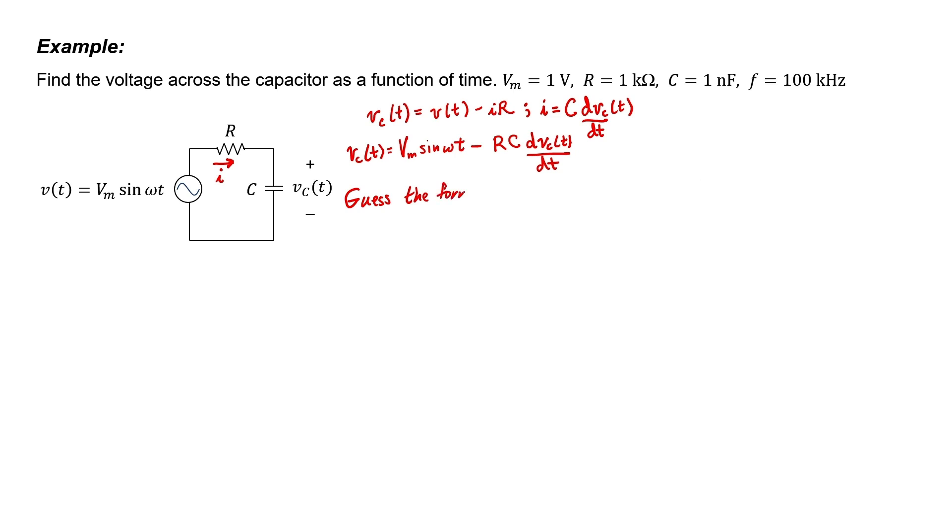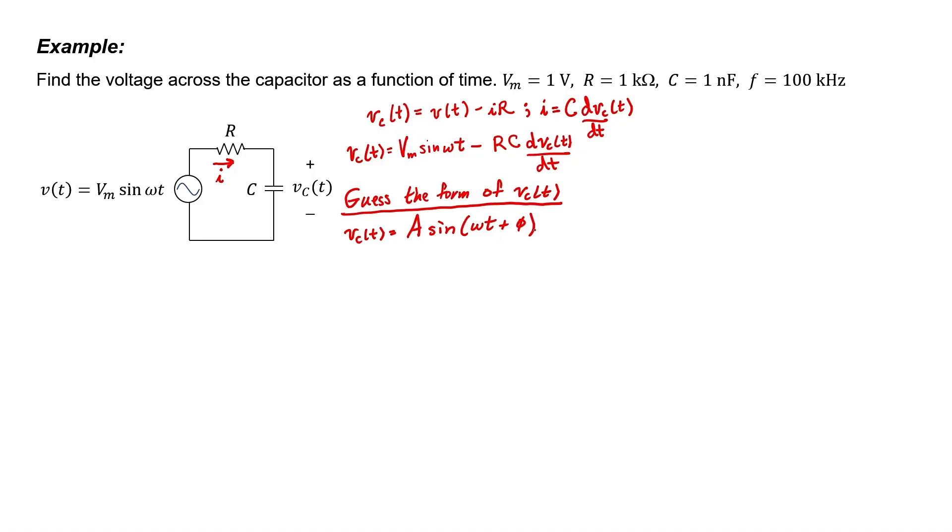One way to solve differential equations is to make a guess for the solution. I have a feeling that the frequency in this circuit is not going to change. I'm guessing that the voltage across the capacitor has some unknown amplitude A, which I intend to find, and although I expect it to have the same frequency as the source, I expect also that it might have some phase shift phi relative to the source that I also intend to find. I intend to substitute this expression of the voltage back into my differential equation and try to find A and phi.